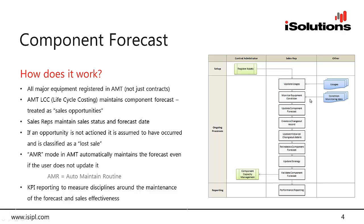Any updates the sales rep receives because of condition monitoring alerts would allow them to update the component forecast. They can change or create a changeout record. For example, if the customer says they actually changed a component out three months ago, the sales rep can update that within AMT, revising the forecasted changeout and maintaining the component changeout schedule. They can also capture any customer-specific strategy requirements, such as a customer insisting on using Cat Reman.